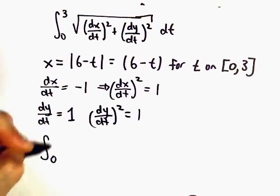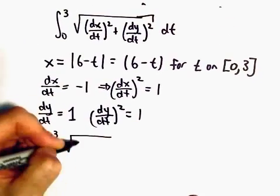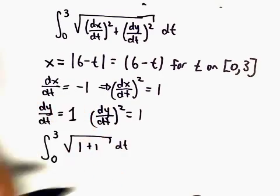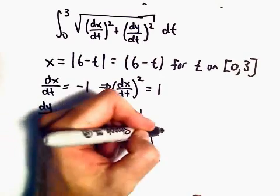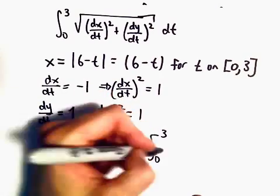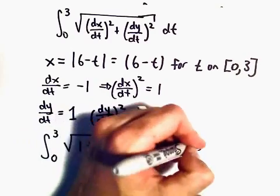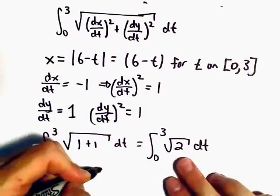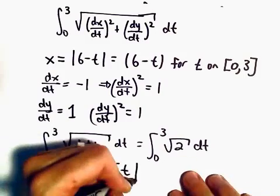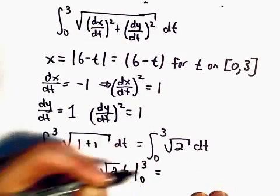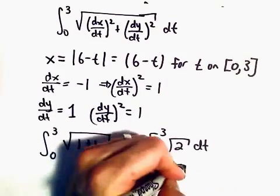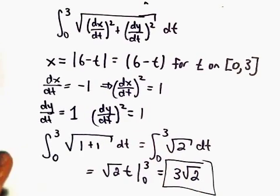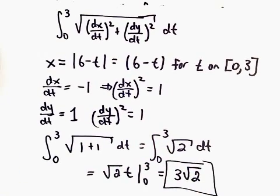Easy enough. So we've got the integral from 0 to 3, and we just have 1 plus 1 dt. That's the integral from 0 to 3 of the square root of 2 dt. When we integrate we'll get the square root of 2 times t, evaluated from 0 to 3. That's just going to leave us with 3 root 2 minus 0, so our arc length will simply be 3 times the square root of 2.